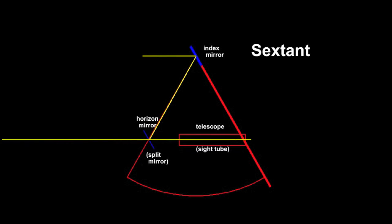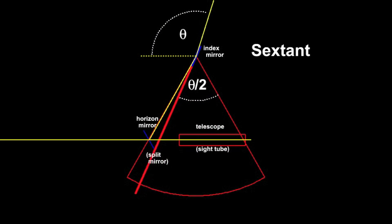A sextant measures angles between sight lines by viewing those sight lines through a series of mirrors. It then adjusts the angles of the sight lines by changing the angles of the mirrors.